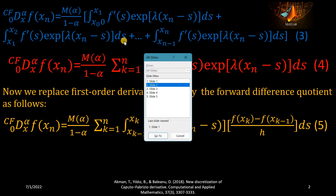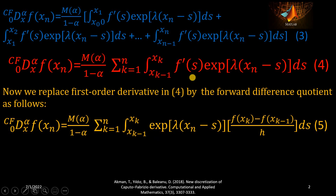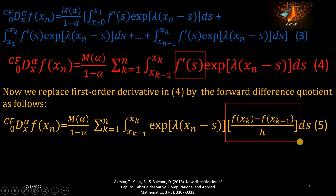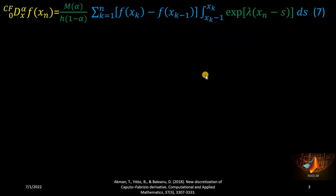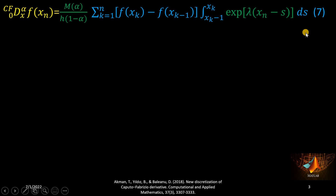We now use the forward difference quotient to approximate the first-order derivative that appears in equation 4. In equation 5, this first-order derivative has been replaced by the forward difference quotient. The forward difference quotient has h (the time step size) in the denominator, which is taken outside to obtain equation 6. After that, the exponential term — the only term involving the variable s — is integrated, giving equation 7.